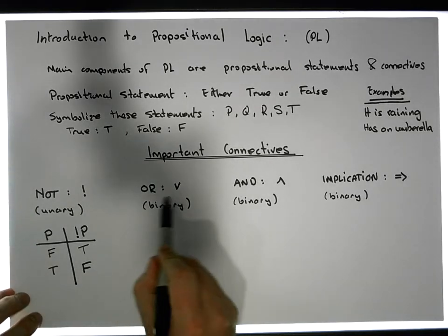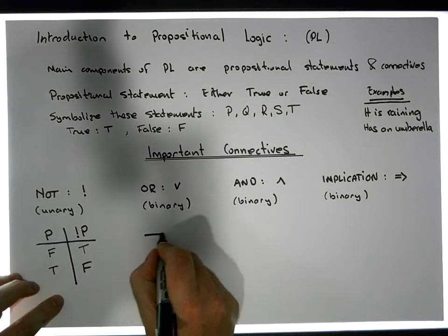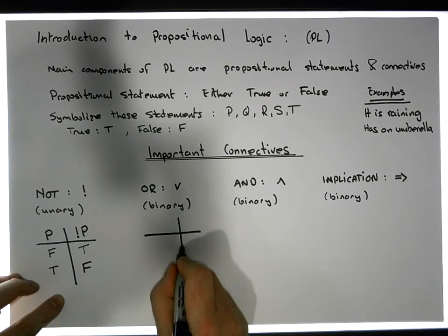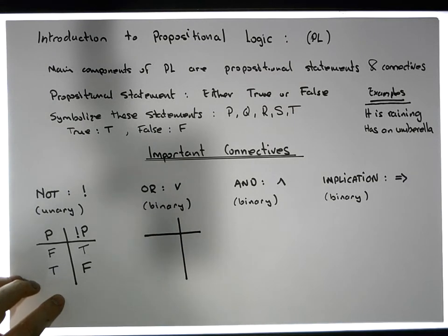How does the binary operator OR work? Well, once again, we'll define how it works through a truth table, something like this. Don't forget the binary OR takes two propositions.